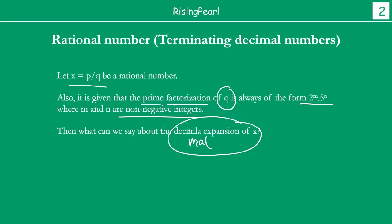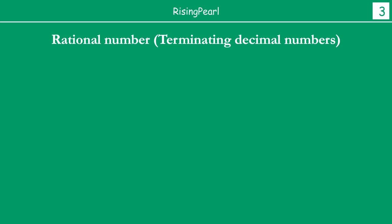In the last video, we were basically given a decimal number which had a terminating decimal expansion, and we realized that once you express it in the form p by q and prime factorize q, you always get the denominator in that form. So here the question is the opposite. We have a rational number given in the form p by q, and it is given that the prime factorization of q is of this form. Can we say anything about its decimal expansion? Let's find out by going through some examples. Let's say we have 5 by 8.